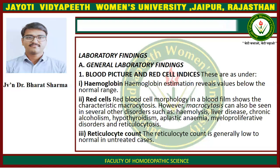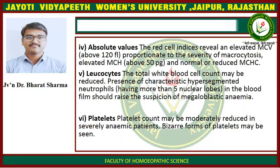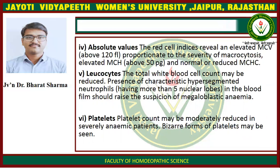Reticulocyte count is generally low to normal in untreated cases. The red cell indices reveal an elevated MCV proportionate to the severity of the anemia, elevated MCH, and normal or reduced MCHC. Leukocytes: The total white cell count may be reduced. Presence of characteristic hypersegmented neutrophils in the blood — having more than five nuclear lobes — should raise the suspicion of megaloblastic anemia. Platelets count may be moderately reduced in the severely anemic patient; bizarre forms of platelets may be seen.